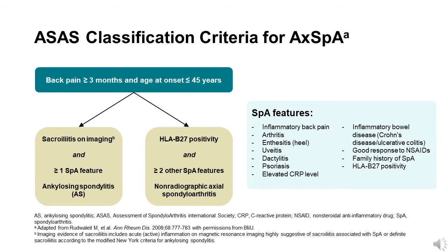Features of spondyloarthritis include inflammatory back pain, peripheral inflammatory arthritis, enthesitis, uveitis, dactylitis, psoriasis, Crohn's disease or ulcerative colitis, good response to non-steroidal anti-inflammatory drugs, family history of spondyloarthritis, HLA-B27 positivity, and elevated C-reactive protein.